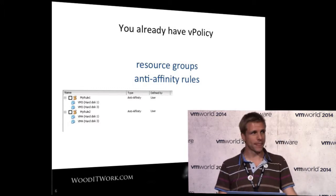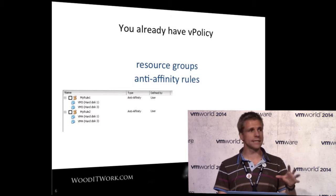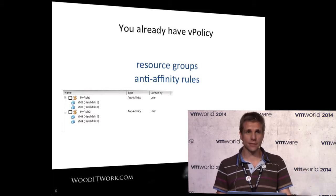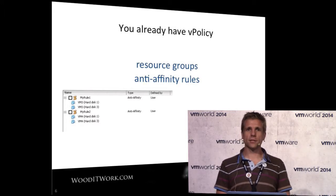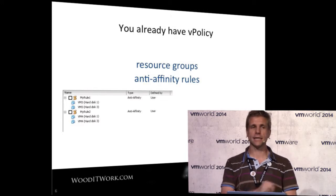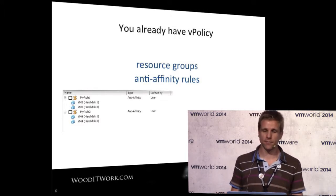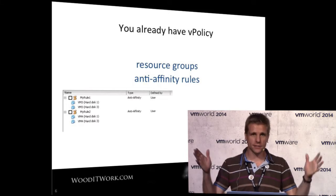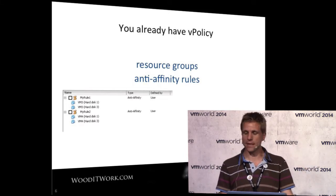Back to a virtual environment - you actually already have virtual policies. Resource groups are a policy you've decided on: production servers need more resources than test servers, which need more than workstations. Anti-affinity rules are also a form of policy - you have two web servers and you want to ensure they're running on different hosts, maybe in different blade chassis or different racks. Affinity rules are often used for licensing - you want SQL boxes or Oracle boxes all together on one host to manage your licensing. These are things you do today already with policy.